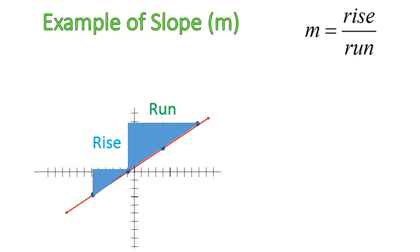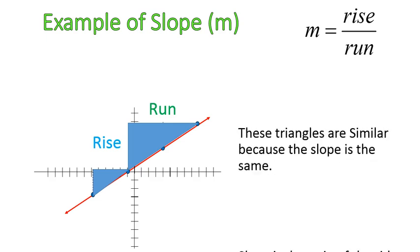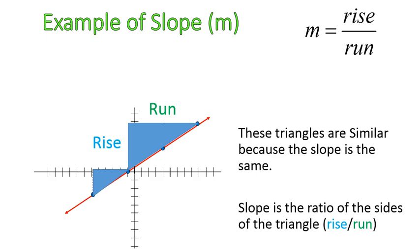Slope is the rise over the run. I've taken this example from our previous slide. It's the same line as what I had before with the rise of three over the run of five, only I've made two similar triangles. These triangles are similar because the slope's the same. The slope is that ratio of the sides.